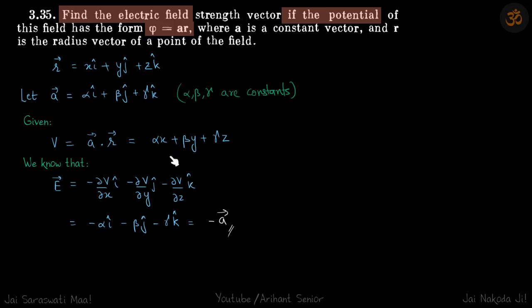So, we do that minus dV by dx. So, these two terms will get cancelled. This term will remain and this will become minus alpha. So, minus alpha i cap. Similarly, minus beta j cap minus gamma k cap, which is